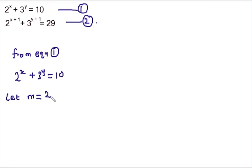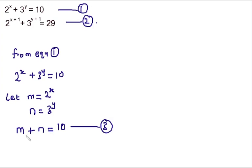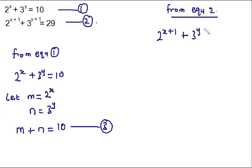Let m = 2^x and n = 3^y. Then equation one becomes m + n = 10, which we call equation three. For equation two, we have 2^(x+1) + 3^(y+1) = 29. We can simplify: 2^(x+1) = 2^x × 2 and 3^(y+1) = 3^y × 3, so the equation becomes 2·2^x + 3·3^y = 29.